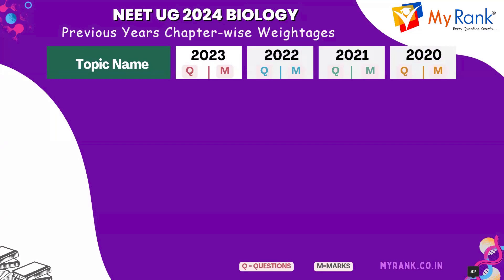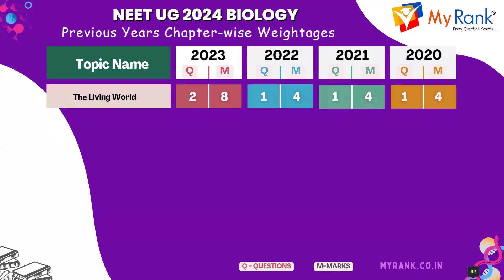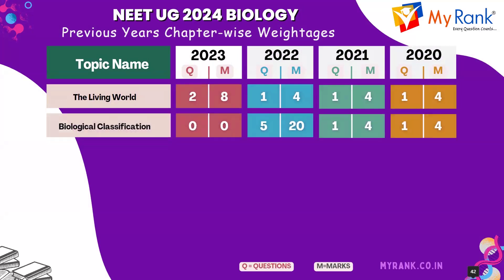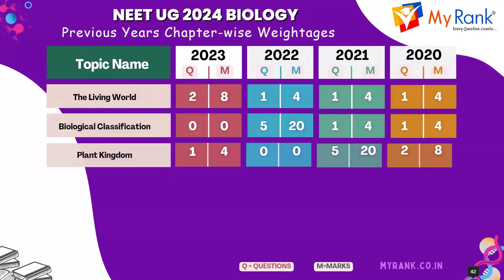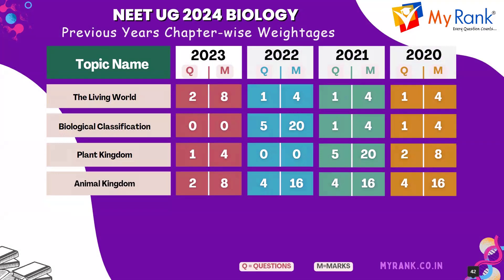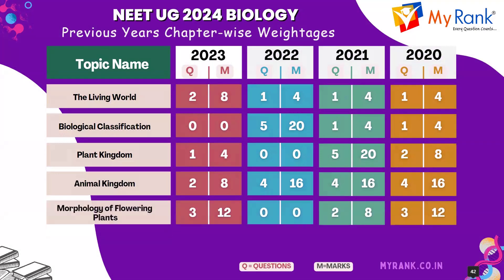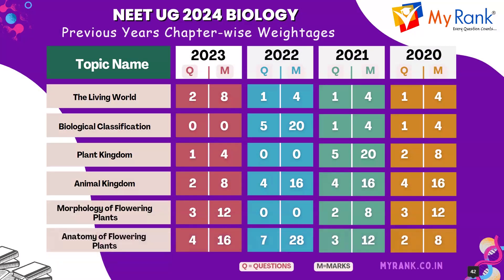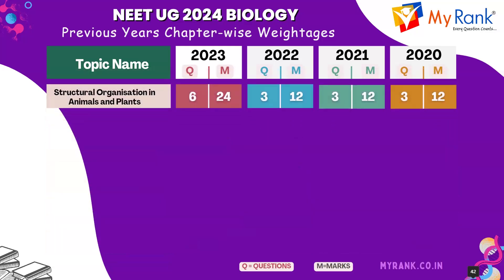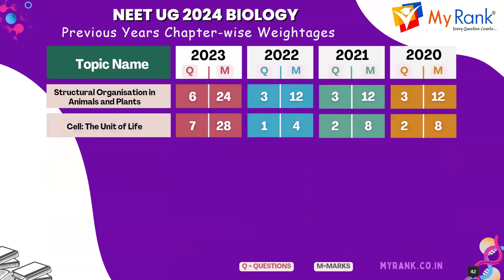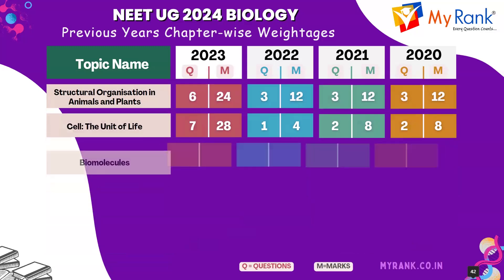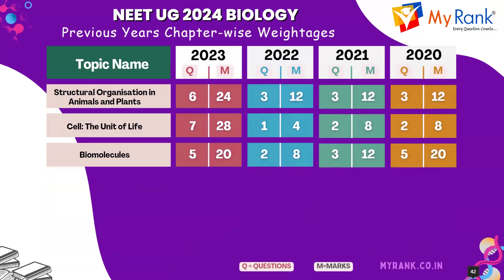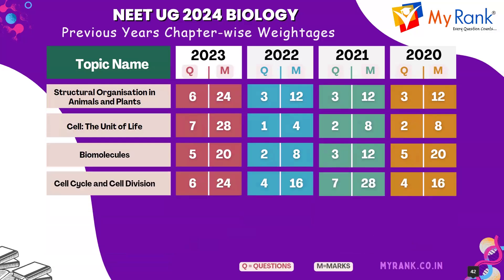Here are the chapter wise weightages for the topics: the living world, biological classification, plant kingdom, animal kingdom, morphology of flowering plants, anatomy of flowering plants, structural organization in animals and plants, cell: the unit of life, biomolecules, and cell cycle and cell division.